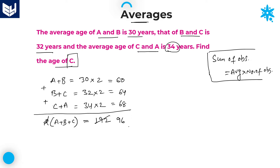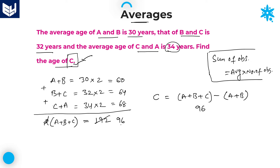Now we have A plus B plus C equals 96. The question is asking for the age of C. If you want the age of C, C equals total minus A plus B. The total is 96 and A plus B is 60, therefore C equals 96 minus 60, which is equal to 36 years.